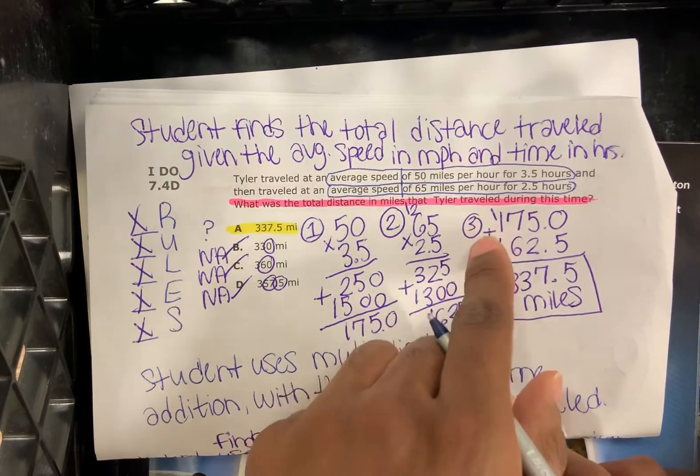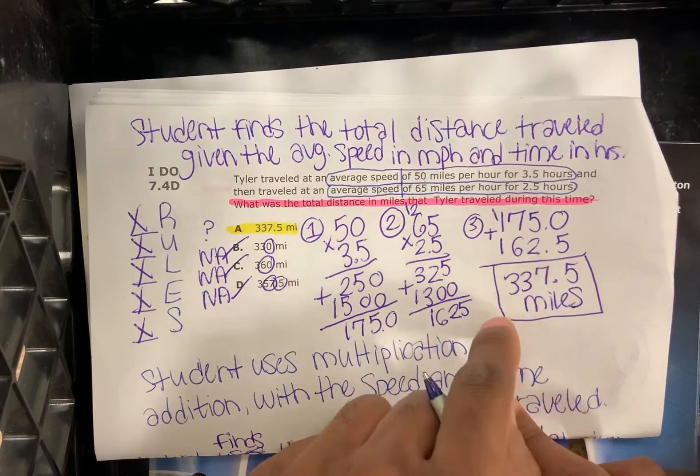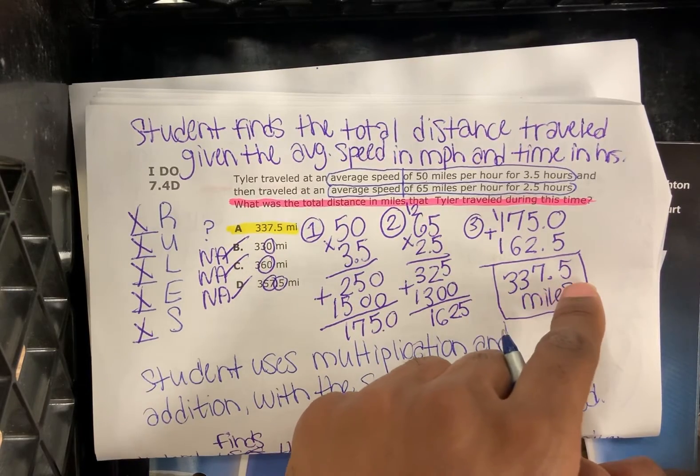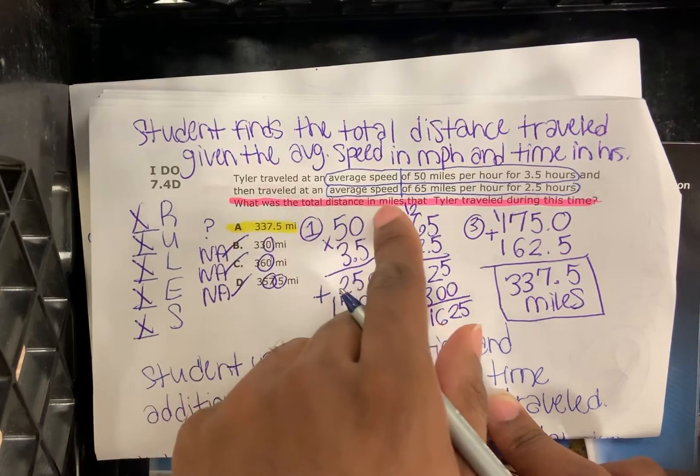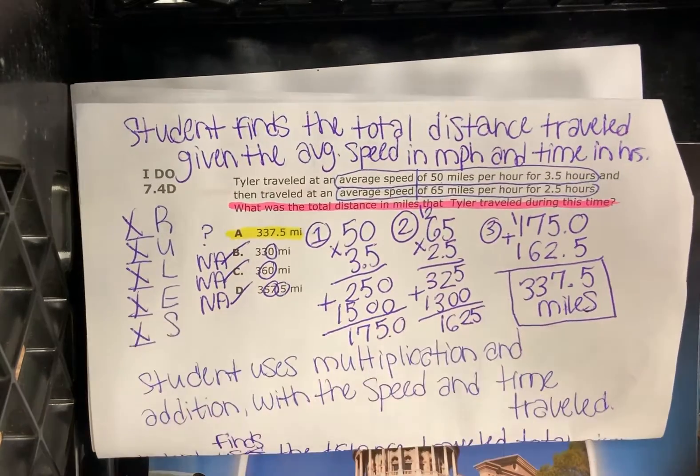We're going to combine this together in step 3. 175 plus 162.5, that gives us 337.5 miles per hour, which is the question: what was the total distance in miles that Tyler traveled during this time?